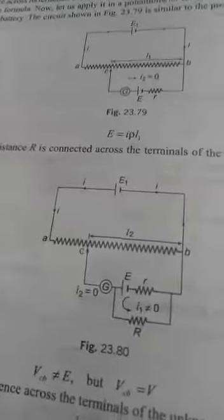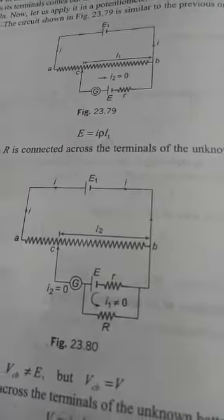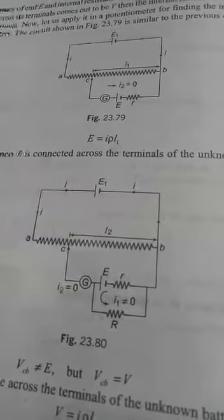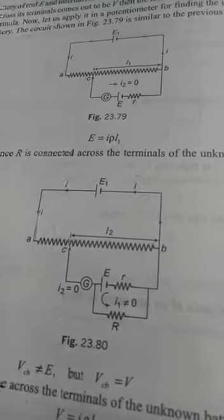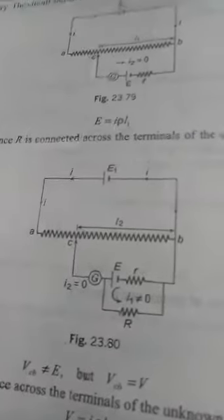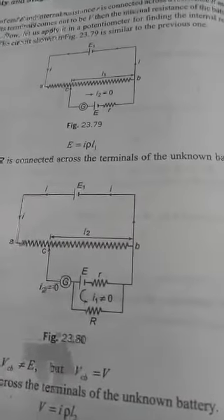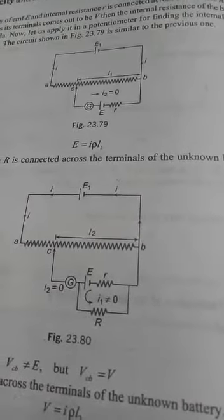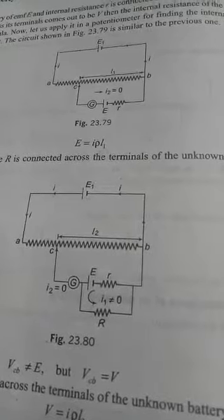After that, what you do is that you bring another resistor capital R and you connect in parallel to this particular second battery. So there, you again readjust the jockey and you can see in the second case the length becomes l2, and in the first case the length is l1.